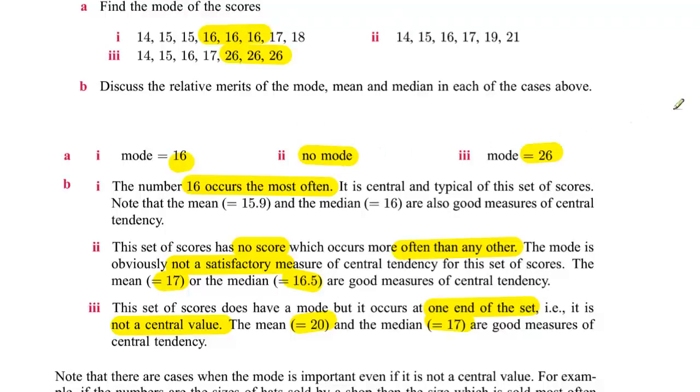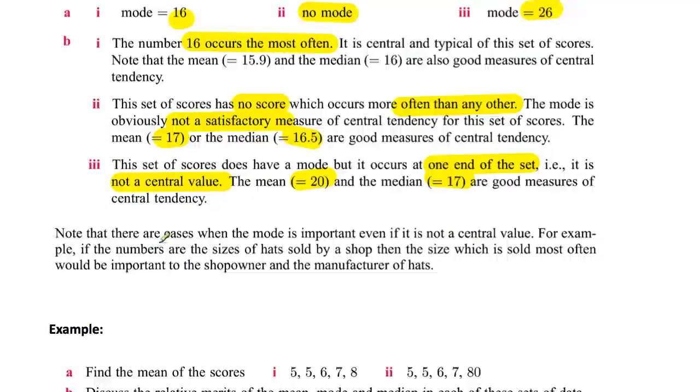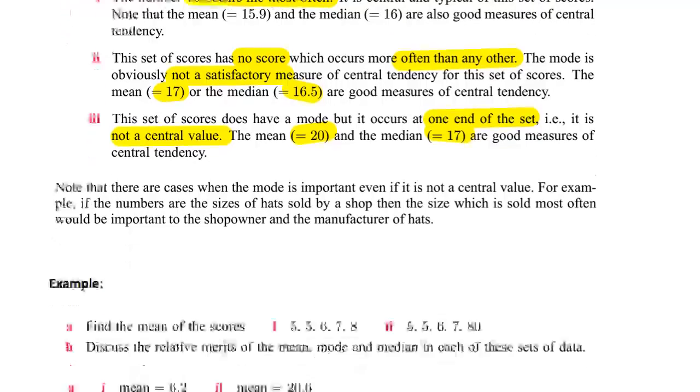Sometimes they do, sometimes they don't. It says note that there are cases when the mode is important even if it's not central. So what we can say here is if the numbers are the sizes of hats sold by a shop, then the size which is sold most often would be very important even though it's not a measure of the middleness or the average that is sold.